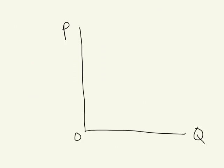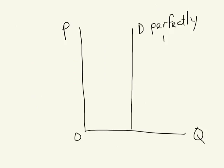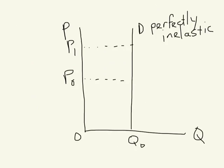In the extreme, we talk about perfectly inelastic demand curves. Notice what's happening here — I'll start at some initial price and quantity, P-naught, Q-naught. Even a really big price change — a doubling of price — and look, quantity demanded stays exactly the same. So the proportionate change in quantity is zero. Let's call this a 100% increase in price — we'd get zero divided by one hundred percent, which equals zero.